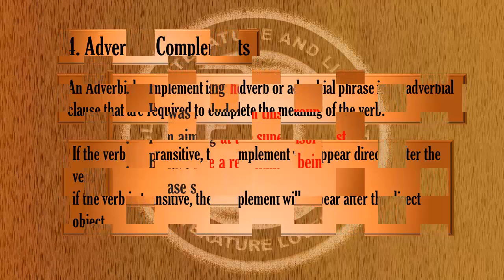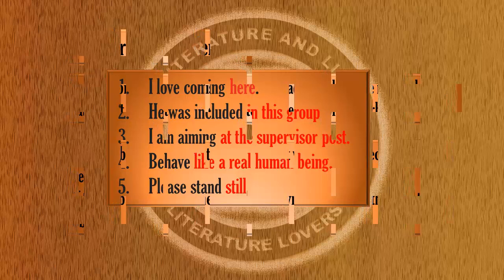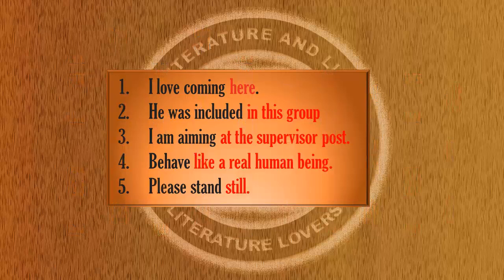Look at these example sentences. 'I love coming here' — 'here' is an adverb and it describes the verb 'coming'. 'He was included in this group' — 'in this group' is a prepositional phrase and it describes 'included'. 'I am aiming at the supervisor post' — 'at the supervisor post' is also a prepositional phrase describing 'aiming'. 'Behave like a real human being' — 'like a real human being' is a prepositional phrase describing 'behave'. 'Please stand still.'